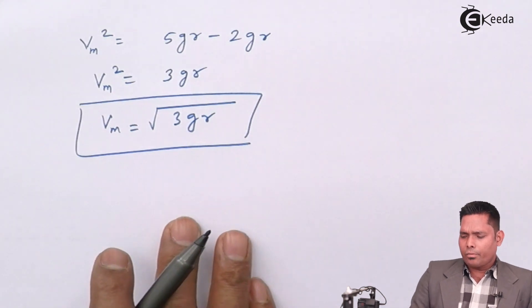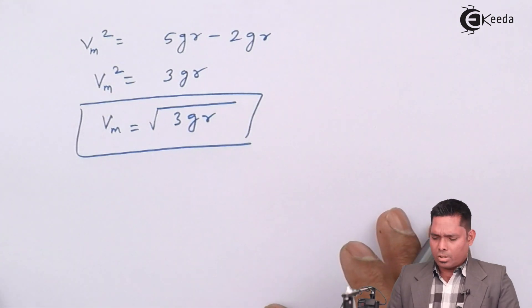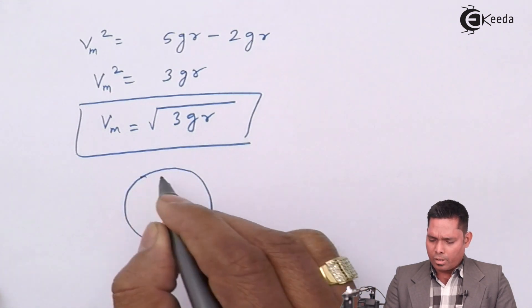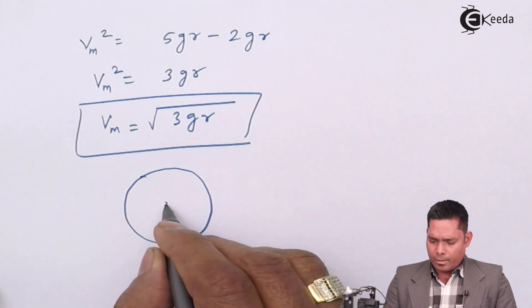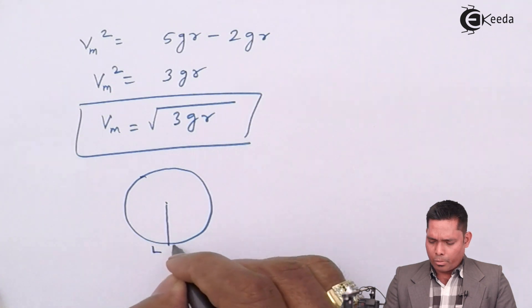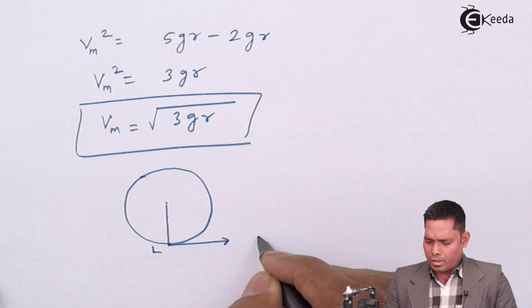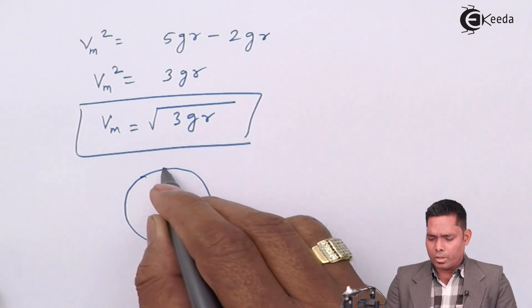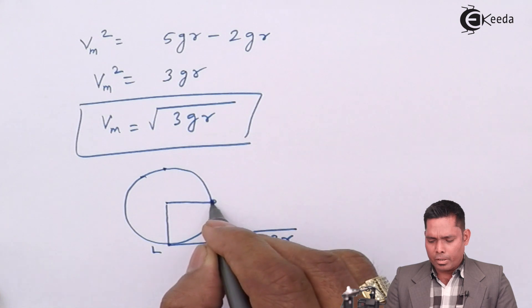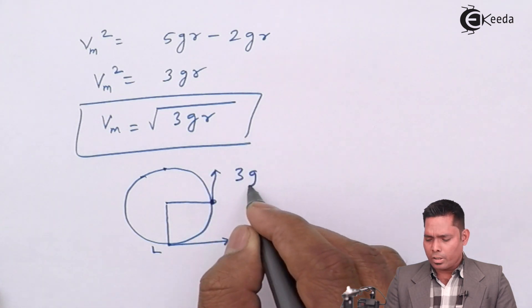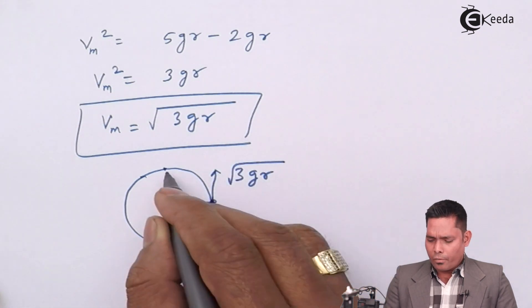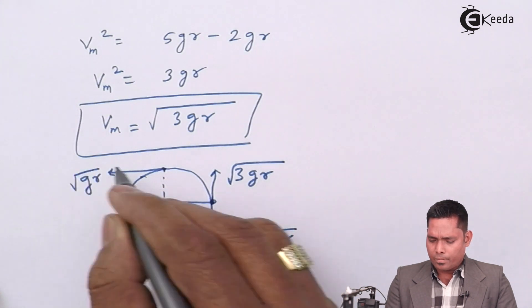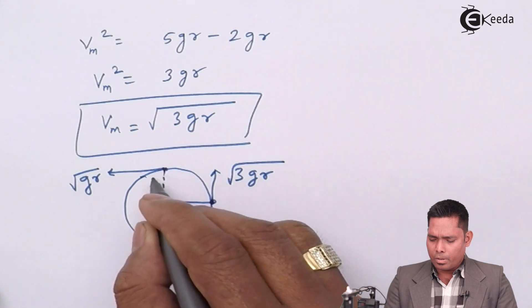So the velocities at different locations in vertical circular motion are: at the lowest point VL = √(5gR), at the midpoint Vm = √(3gR), and at the highest point VH = √(gR). These are the minimum velocities required at each point for the body to complete vertical circular motion.